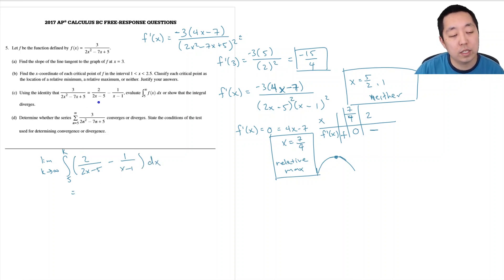So each of, this is, so they did the partial fraction decomposition for you automatically. They didn't make you do that, which is kind of nice. So each of these is kind of a natural log. Because the derivative of this is this. This is just, the derivative of 2x minus 5 is 2. This integral is just ln of 2x minus 5 minus ln of x minus 1. Those are the integrals.